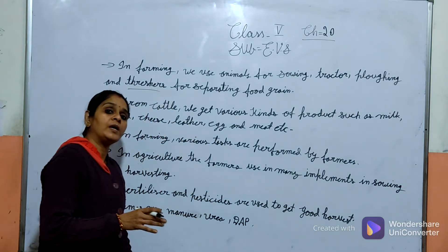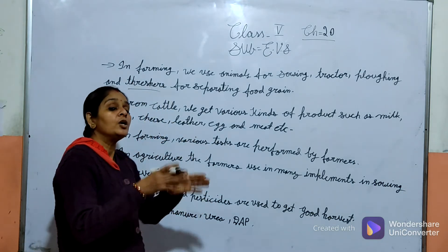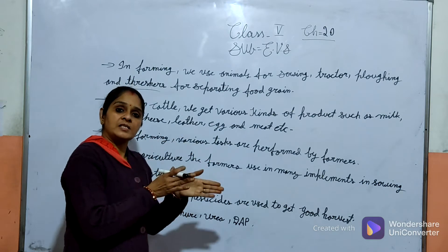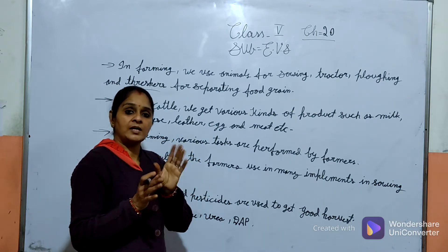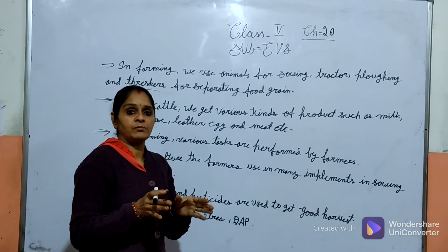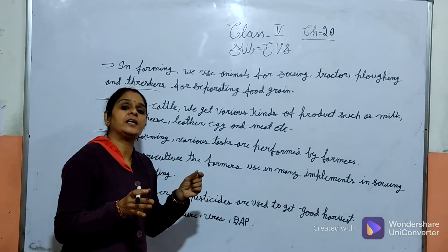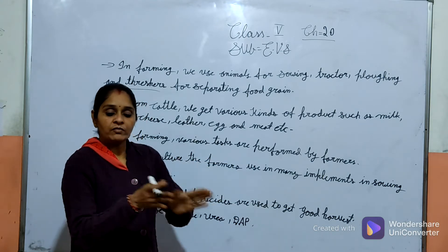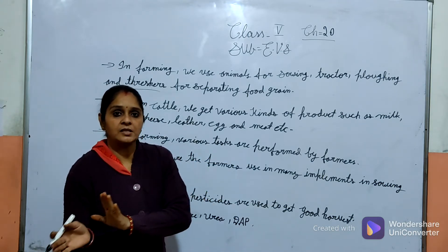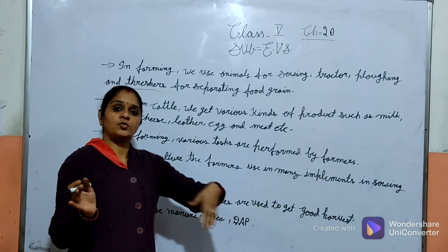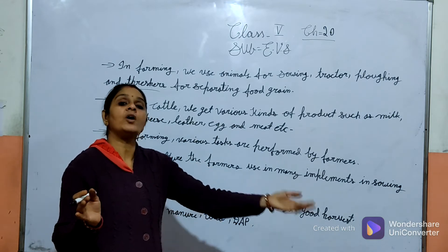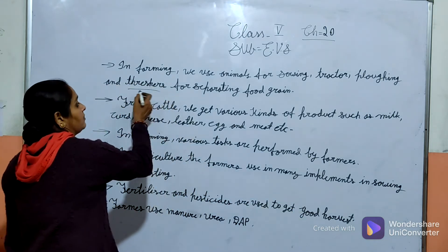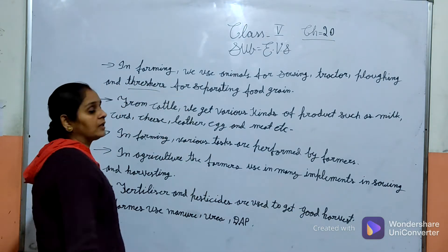When the crops are separated, a thresher machine is placed. The thresher machine gets the full grain out. The grain goes to one side, and the chaff goes to the other side — that is the threshing process.